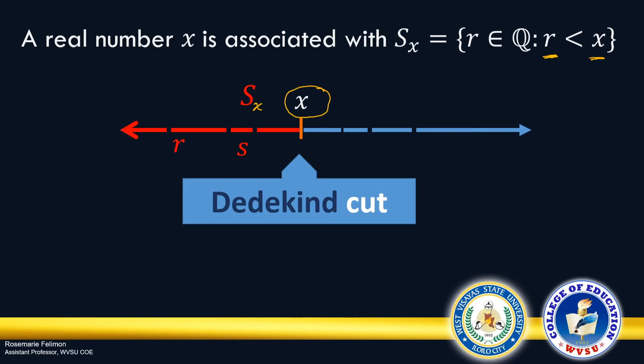And that real number is actually the Dedekind Cut. You have to take note that this cut, this Dedekind Cut, can correspond to the gap, as shown here in the illustration. It means that the Dedekind Cut, which is a real number, may be irrational. Which, as I mentioned, is represented by the gap.